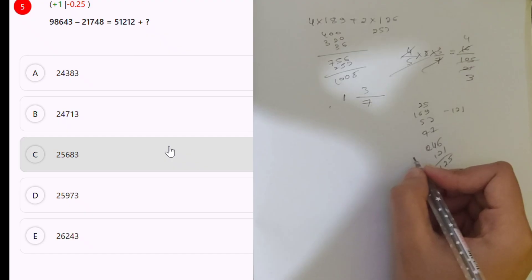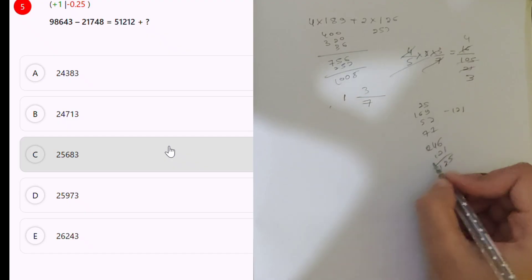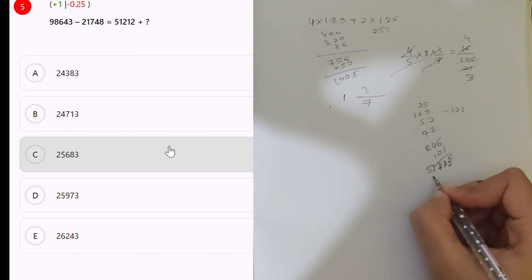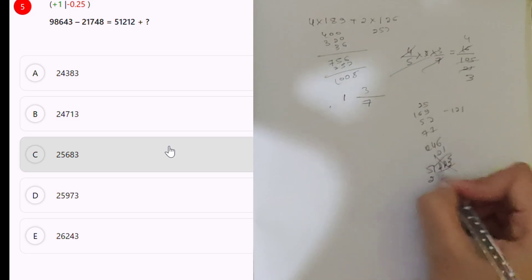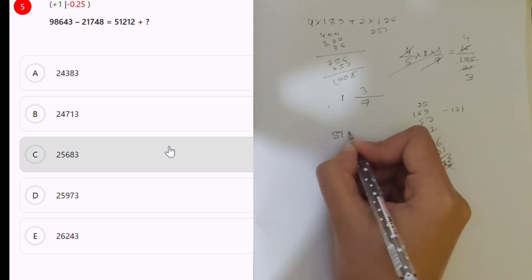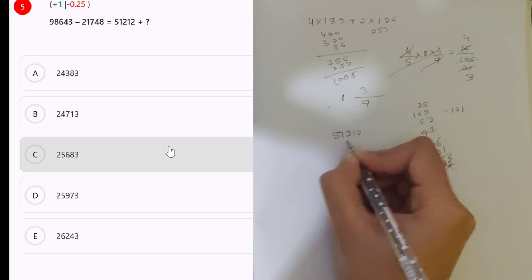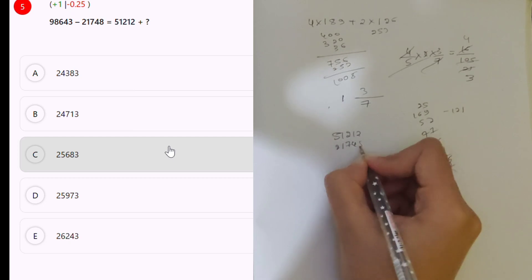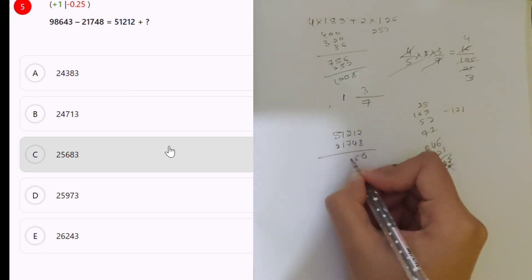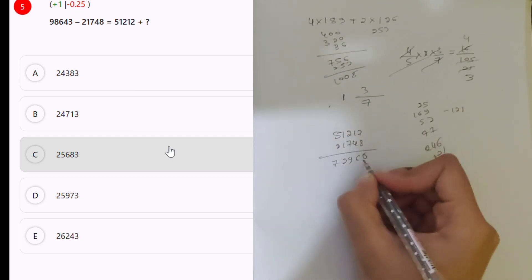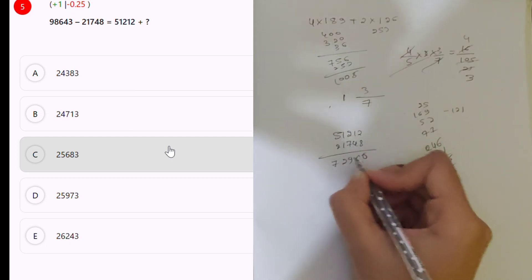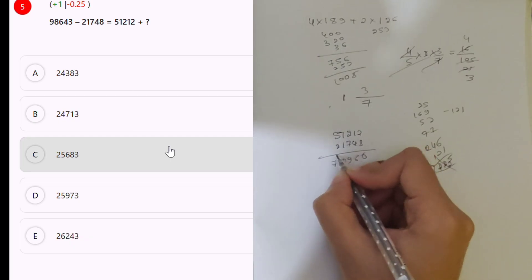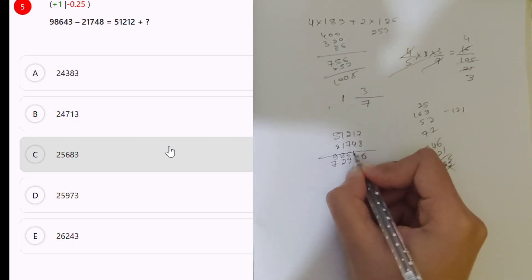One thousand seven hundred and forty-two minus fifty-one thousand two hundred and twelve, plus twenty-one thousand seven hundred and forty-two. Fifty-one thousand two hundred and twelve plus twenty-one thousand seven hundred and forty-eight, so seventy-two thousand, one hundred and sixty, minus 98,643.